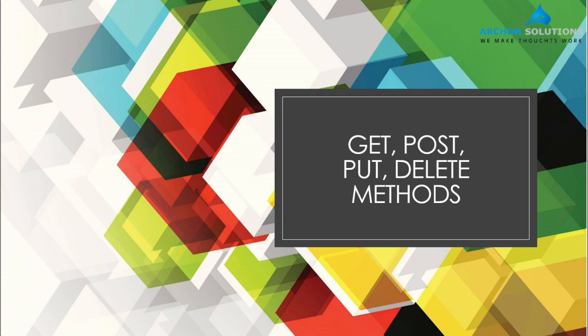Basically this is what is happening in any application — data management. When a front-end is exposed to the user, the user plays around with this data. These are the four main operations a user would be doing: retrieving information, creating new information, updating the data, and deleting the information. This is what we will be dealing with today — the four methods that REST is offering for front-end to back-end communication.